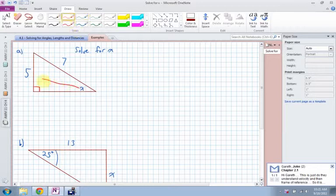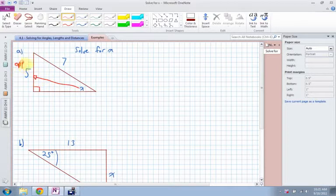Opposite my angle is 5, so that's my opposite side, and 7 is the hypotenuse. We know that because 7 is right across from the right angle. Anything right across from the right angle is the hypotenuse.